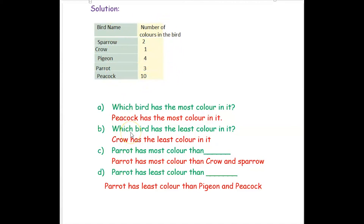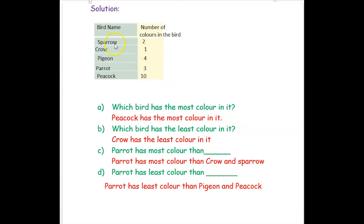We are going to answer the questions from this smart chart. Which bird has the most color? Most is many, so the largest number here is ten, and the bird against ten is peacock. So peacock has the most color in its body. Which bird has the least color? Least means less number, so the smallest is one, and one is against crow. So crow has the least color.